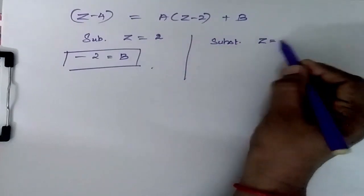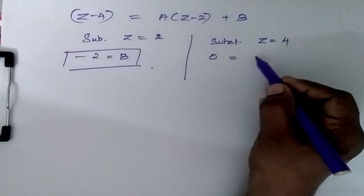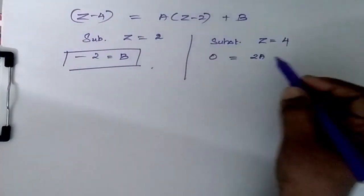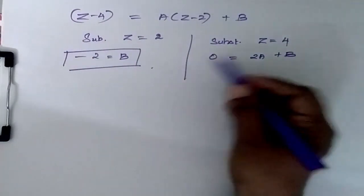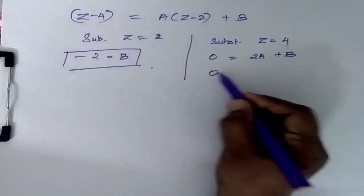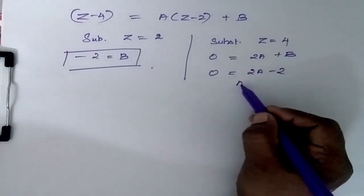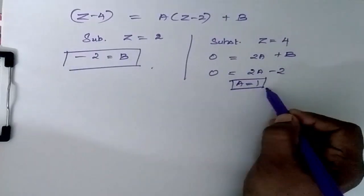Substitute Z is equal to 4. So 0 is equal to 2A plus B. Substitute for B. So 0 is equal to 2A minus 2. So when I simplify, A is equal to 1.